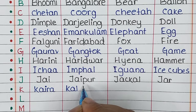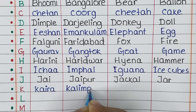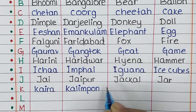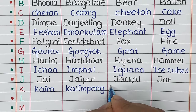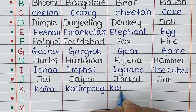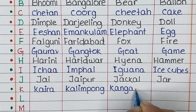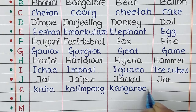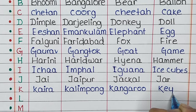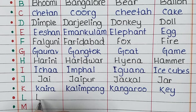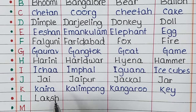Next is letter K. The name is Kaira, the place is Kalimpong, the animal is Kangaroo, and the thing is Kite.